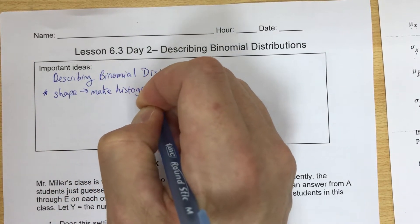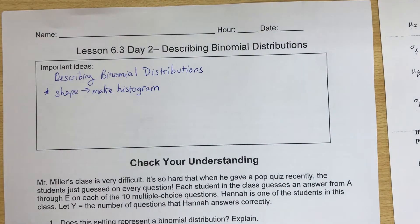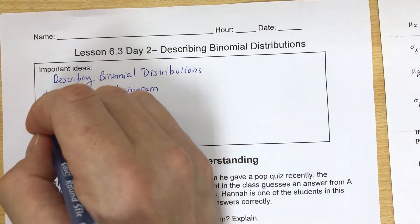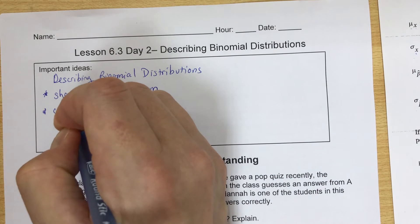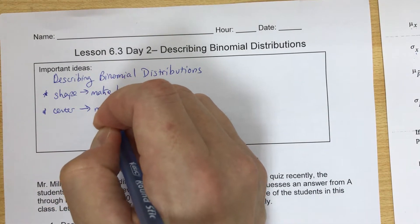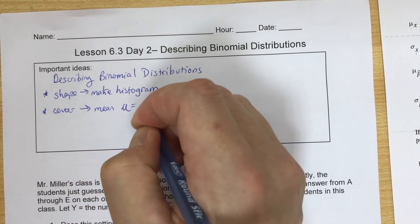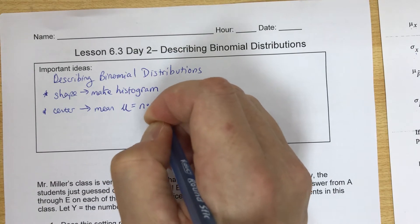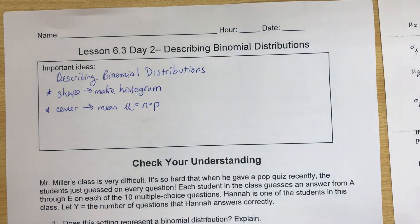We look at the probability distributions, we want to make a histogram. In terms of the center, we want to calculate the mean, which is the number of trials times the probability of success, whatever that is.